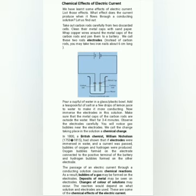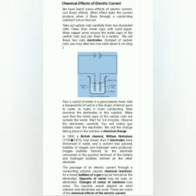Wait for 3 to 4 minutes and observe the electrodes carefully. You will notice gas bubbles near the electrodes. The change taking place in the solution is a chemical change. This was explained by British chemist William Nicholson. The passage of an electric current through a conducting solution causes chemical reactions. As a result, bubbles of gas may be formed on the electrodes, deposits of metal may be seen on the electrodes, and changes of color of solutions may occur. The reaction depends on what solutions and electrodes are used. These are the chemical effects of electric current.